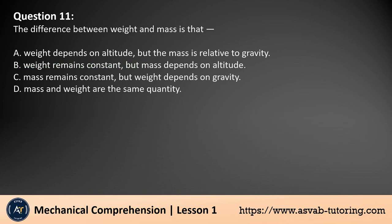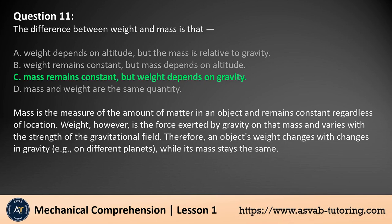Question 11. The difference between weight and mass is that: A. Weight depends on altitude, but the mass is relative to gravity. B. Weight remains constant, but mass depends on altitude. C. Mass remains constant, but weight depends on gravity. D. Mass and weight are the same quantity. The answer is C. Mass is the measure of the amount of matter in an object and remains constant regardless of location. Weight, however, is the force exerted by gravity on that mass and varies with the strength of the gravitational field. Therefore, an object's weight changes with changes in gravity, for example on different planets, while its mass stays the same.